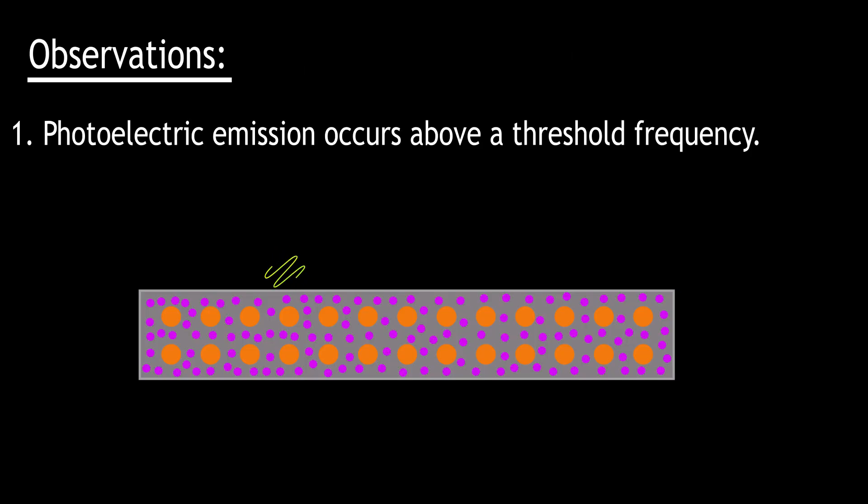The physicists investigating this phenomenon found that firstly, emission of electrons only occurred when the frequency of the incident light was above a certain threshold frequency that depended on the material. For most metals, it's usually somewhere in the ultraviolet region or above.